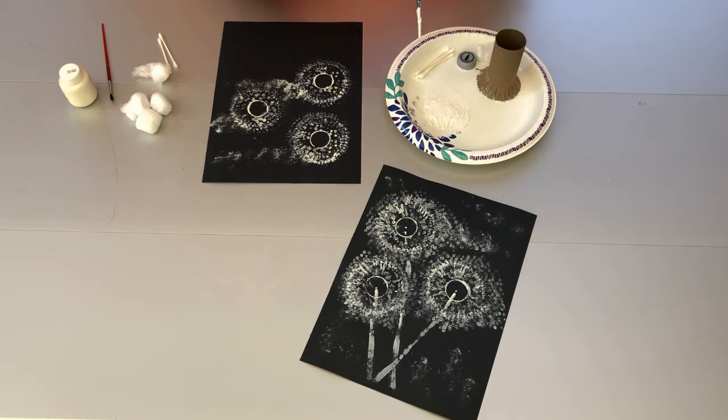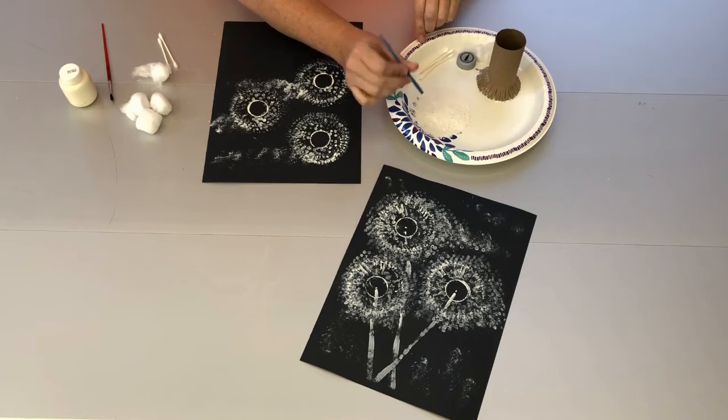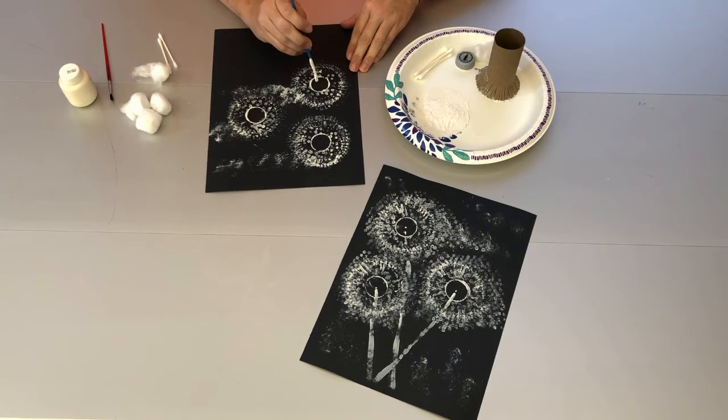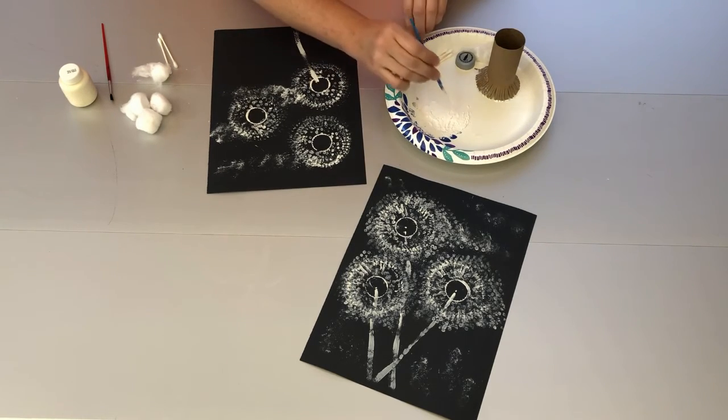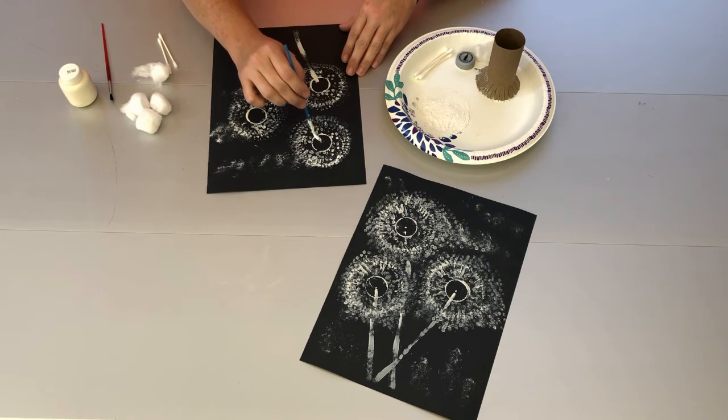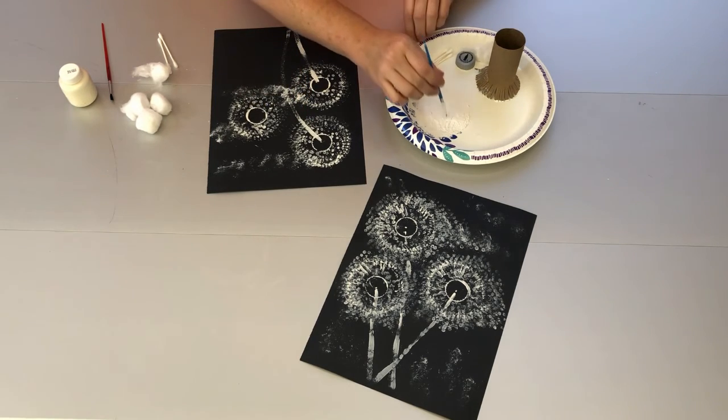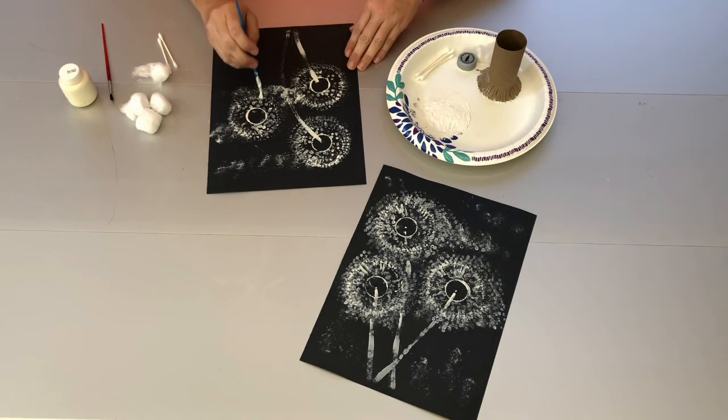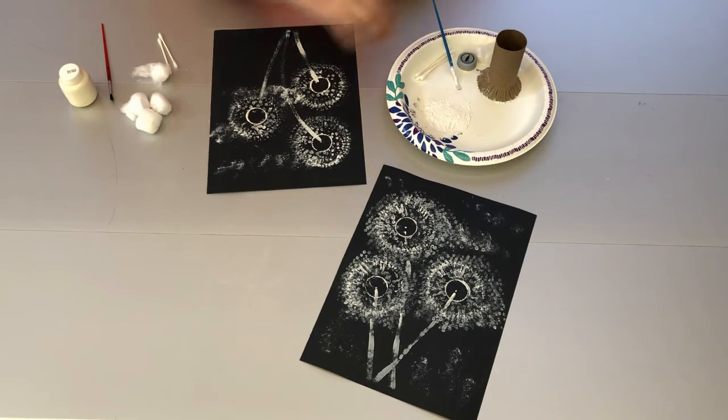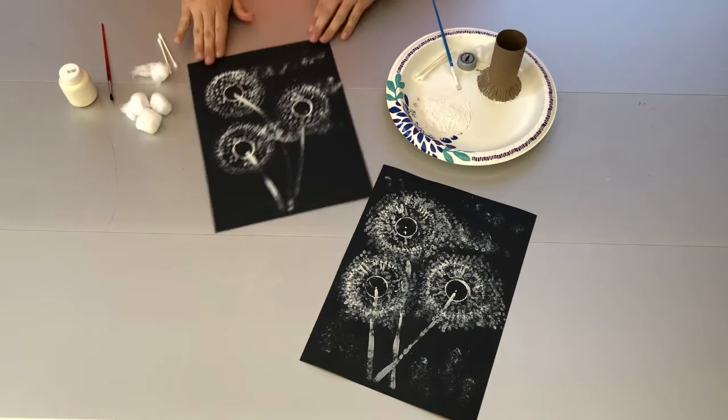And the only thing left to do now is to make our stems. So you'll take your paint brush and just bring it all the way down. And there you have your dandelion painting.